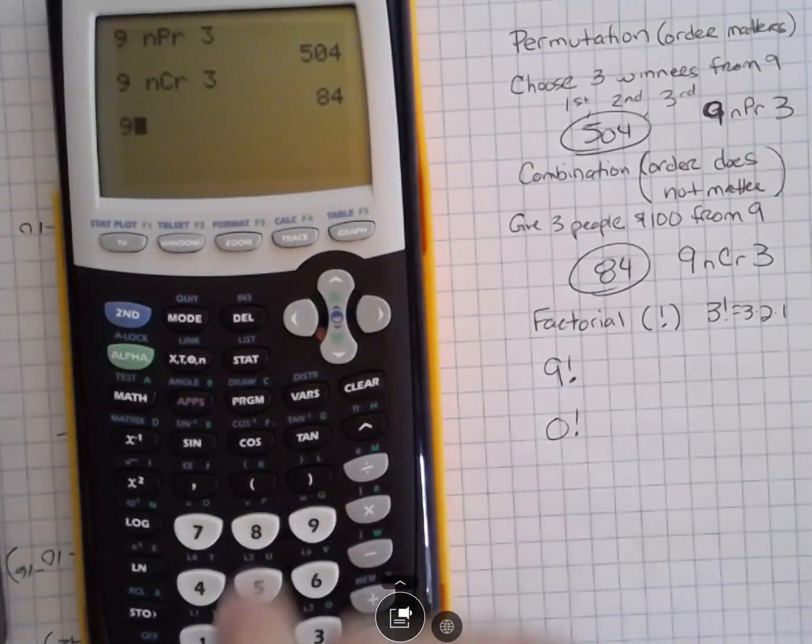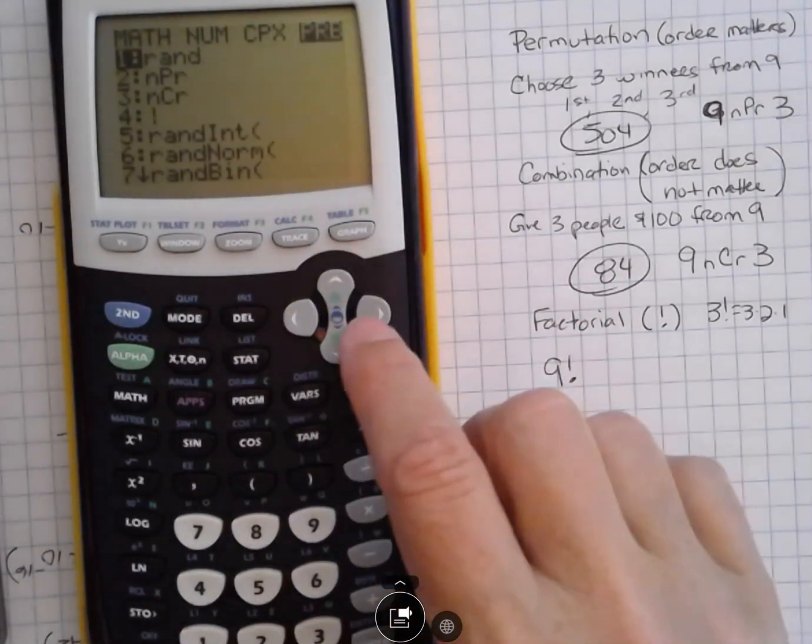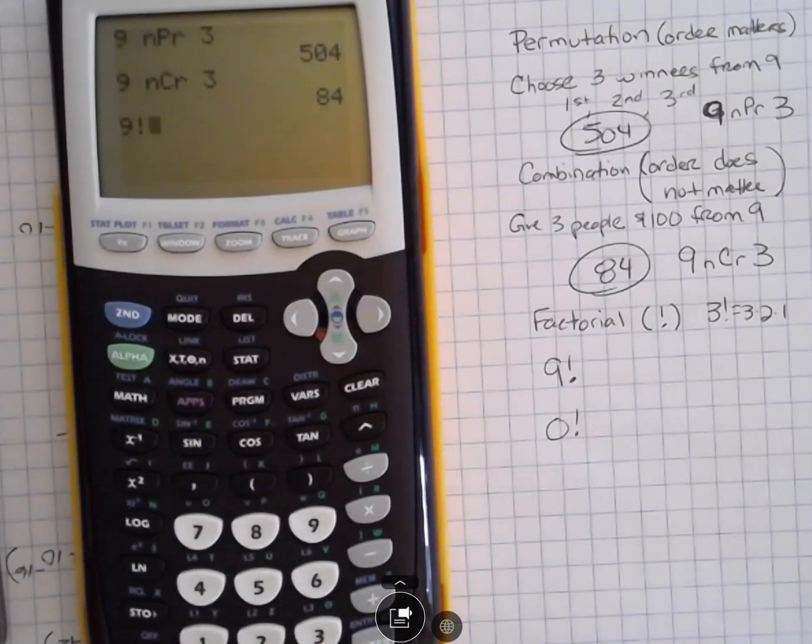So I'm going to do nine math. And then you can see that if I go to probability, that number four on the list is that factorial button. I'm going to hit that and then hit enter. And it's going to show me that if I took nine times eight times seven times six, all the way down to one, this is what I would get.